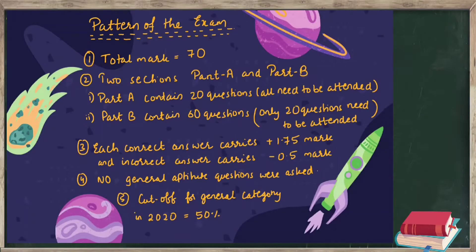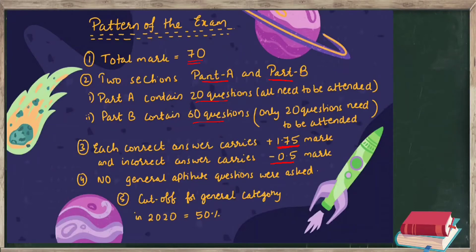This year the total marks was 70 and there were two sessions, Part A and Part B. Part A contains 20 questions which all need to be attended, and in Part B there were 60 questions out of which only 20 needed to be attended. Each correct answer carries 0.175 marks and incorrect answers carry minus 0.5 marks. There were no general aptitude or mathematical questions — only chemistry subject questions. The cutoff for general category was 50%, so scoring 35 and above would qualify you.